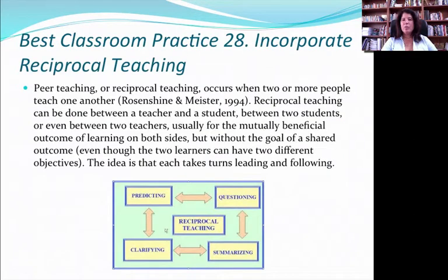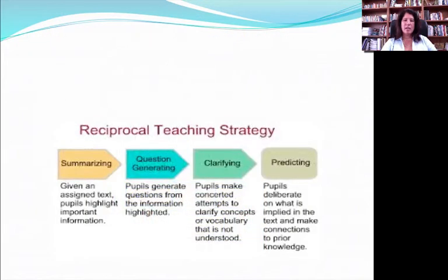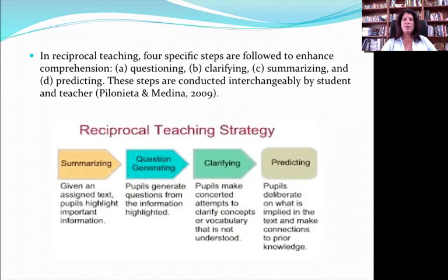Best Practice 28 has to do with incorporating reciprocal teaching. This has to do with an exchange — a student becomes a teacher, the teacher becomes a student, with an exchange back and forth so that there's equality. We know that one of the best ways to learn is to teach, so allowing the student to take on the teaching role at certain points is really key in consolidating their understanding of the information. Reciprocal teaching has four pieces: a student has to learn how to question, clarify, summarize, and predict. This is an iterative process — it doesn't stop there. Once there, you test it, and then you start all over again. So this goes back and forth, back and forth.